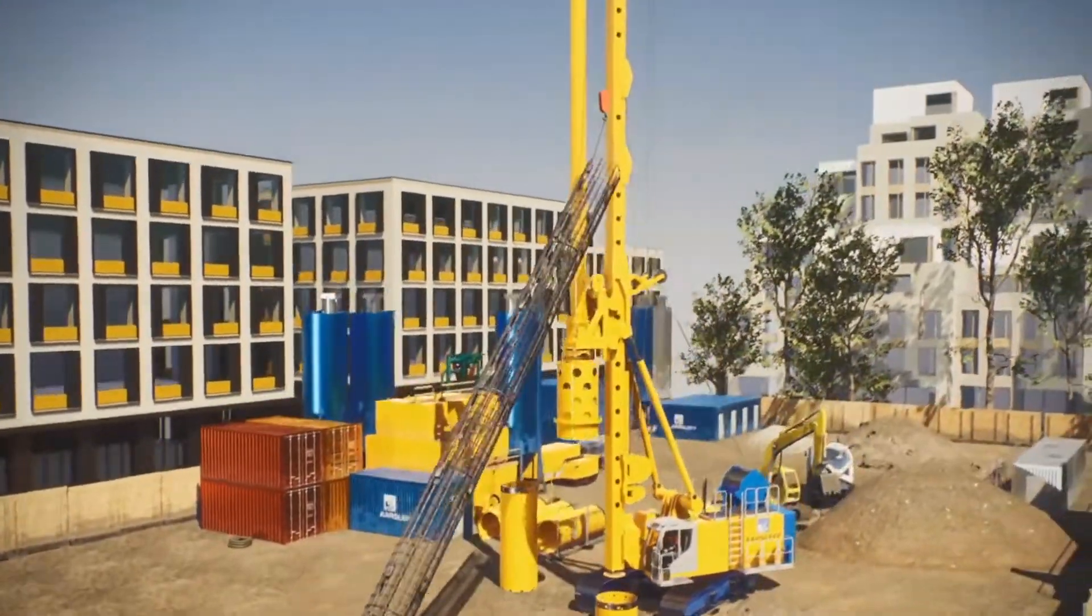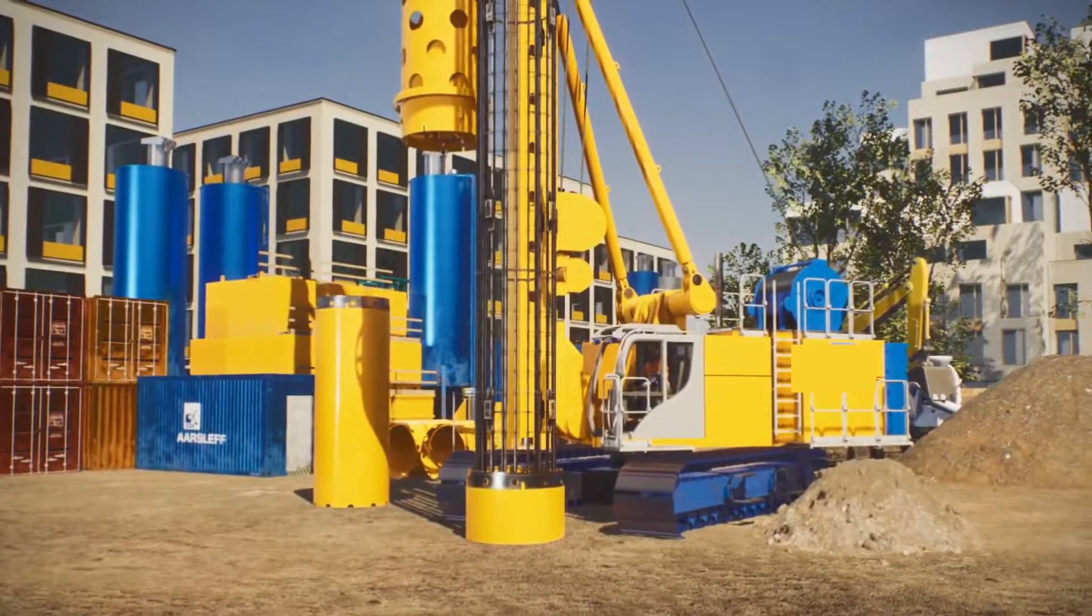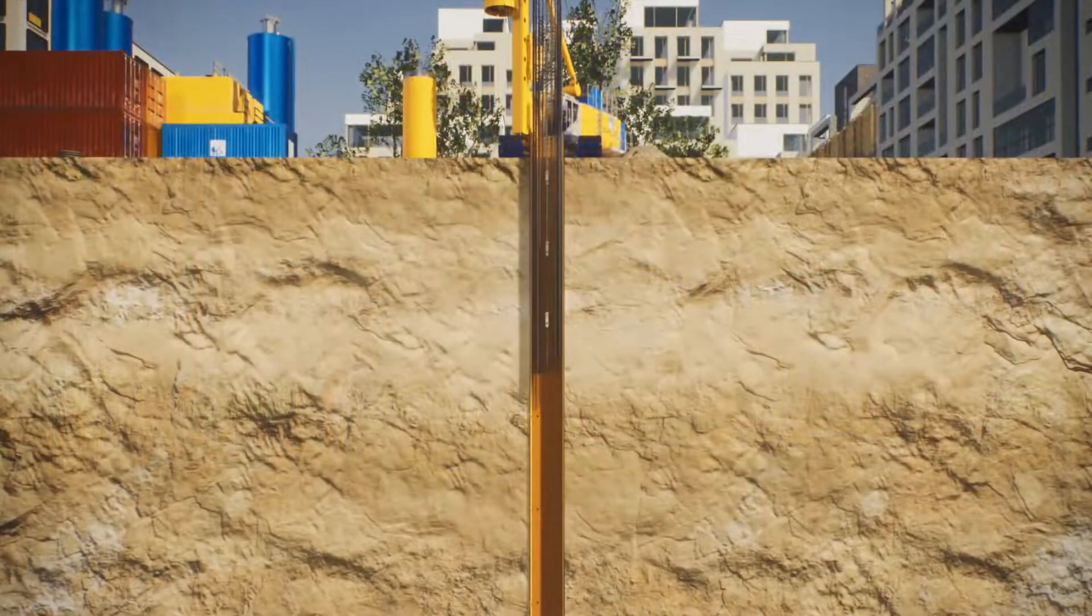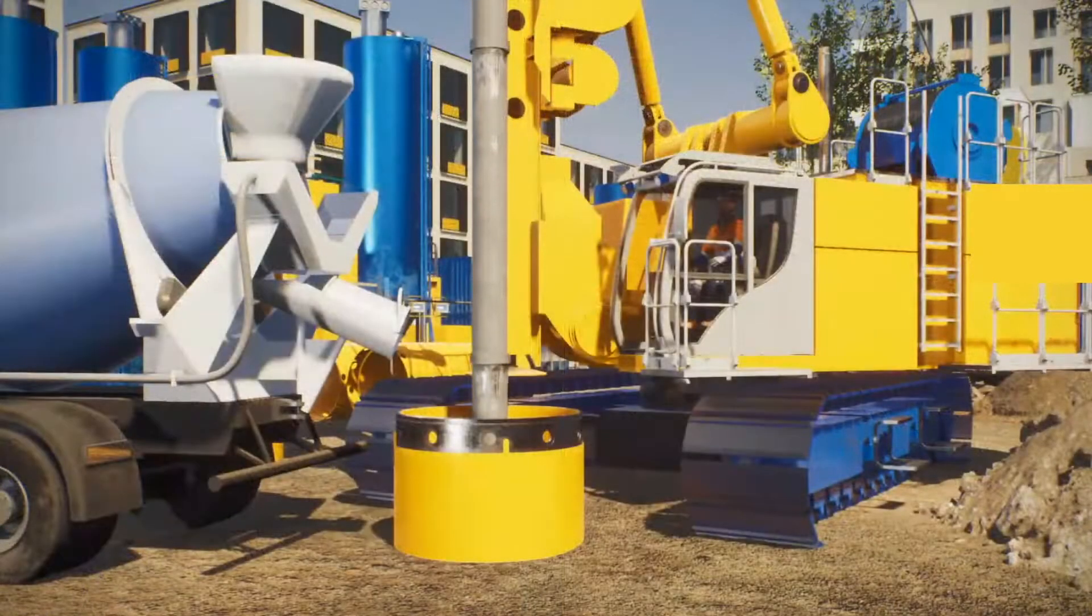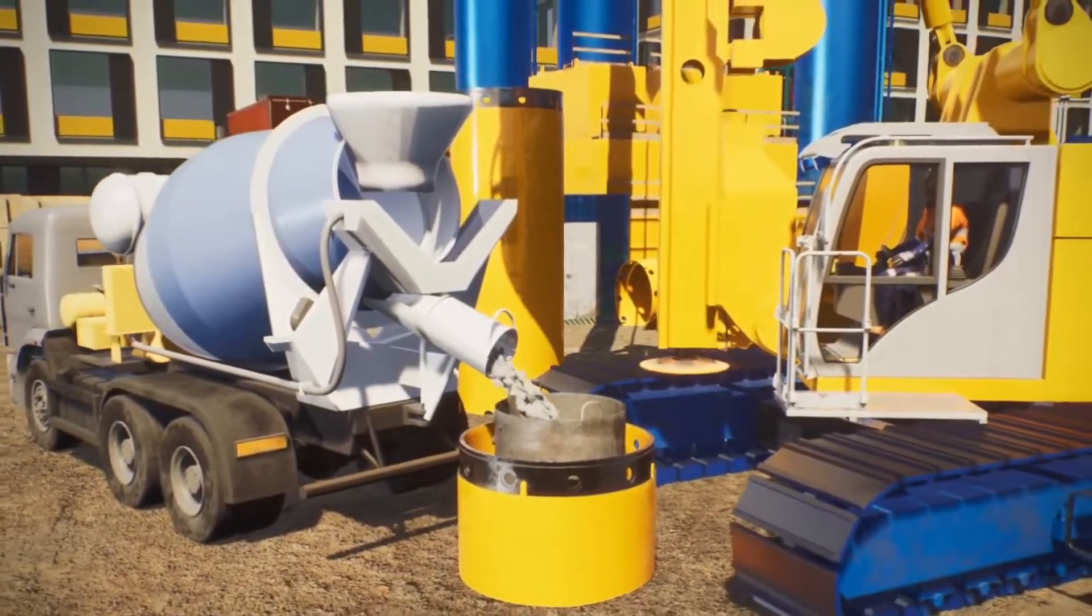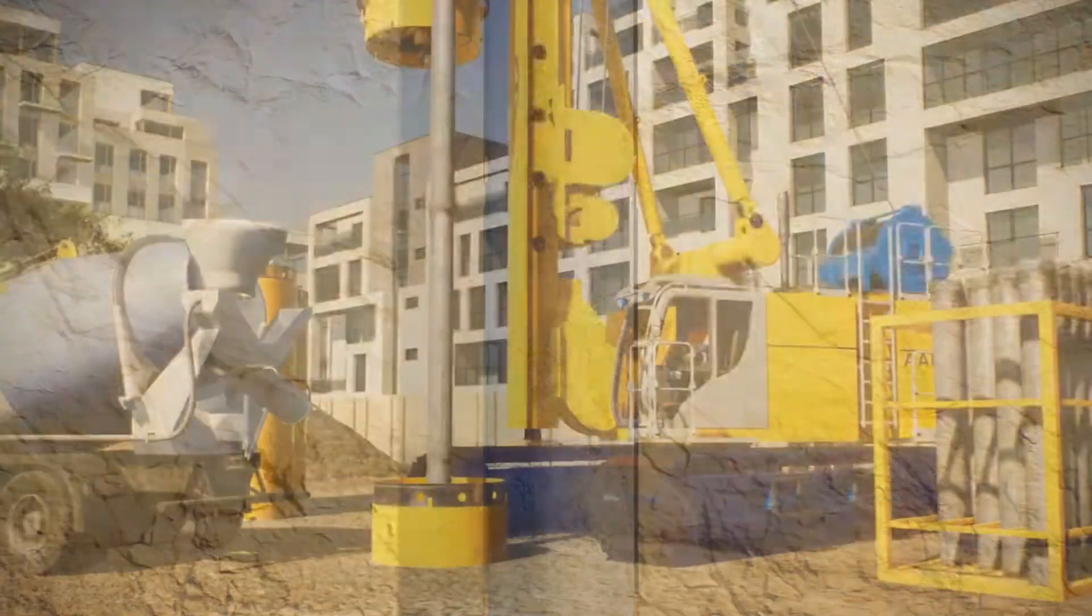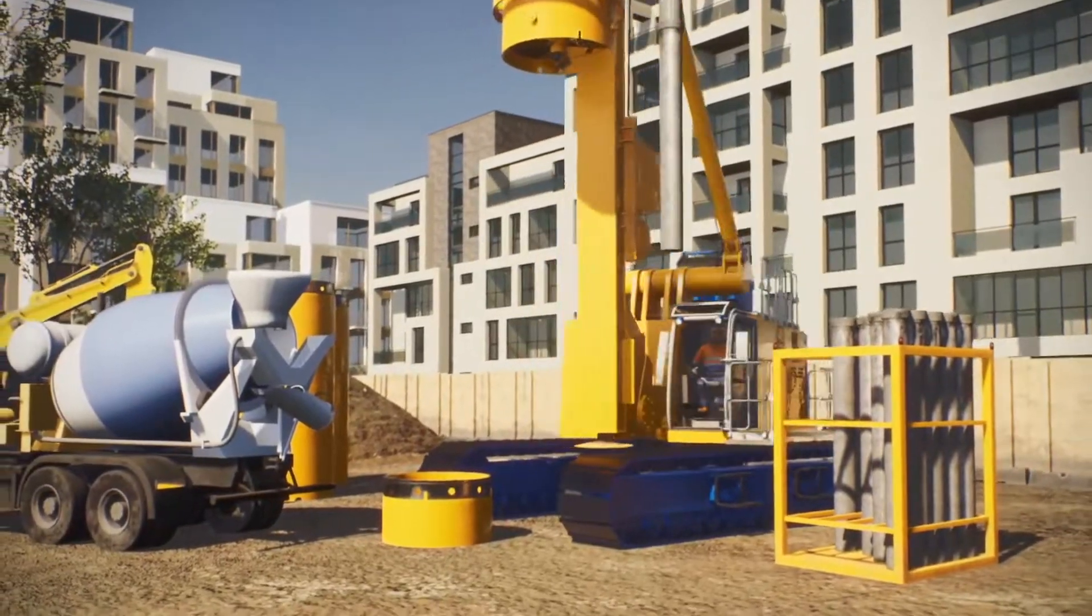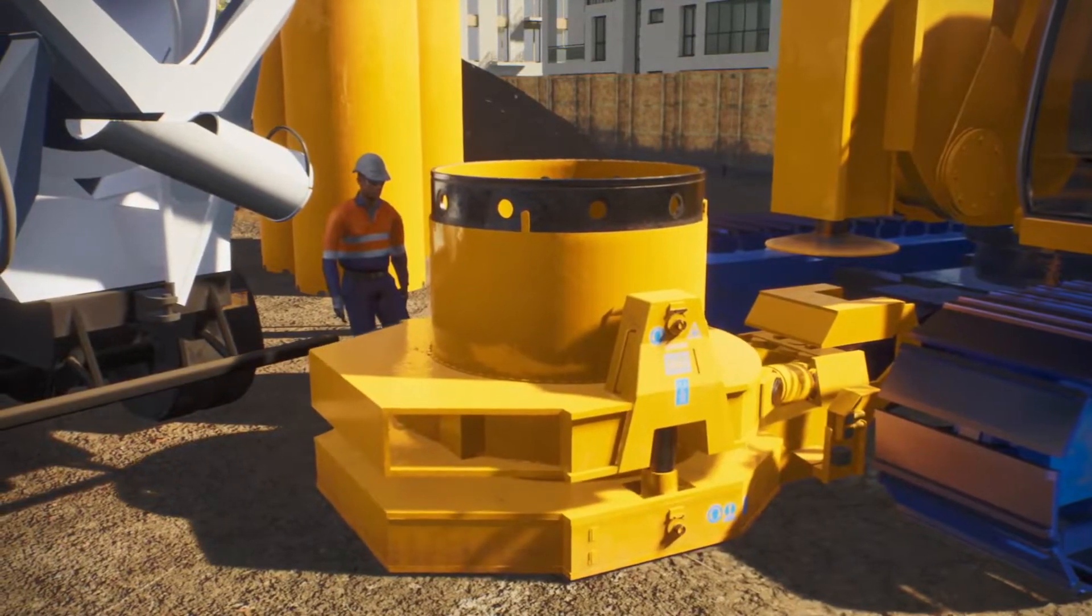After the termination depth is reached, the reinforcement needed as per the pile design is lowered into the steel casing. Concrete is then poured using a tremmy to the base of the piled foundation. After the concrete is fully poured and before it has reached its full strength, the steel casing is removed.